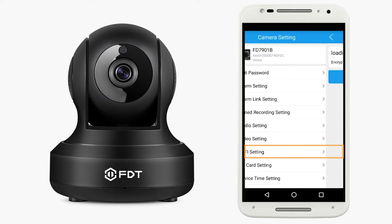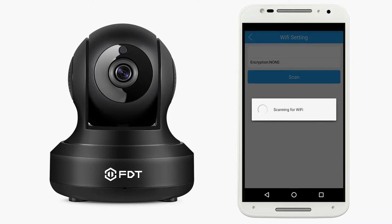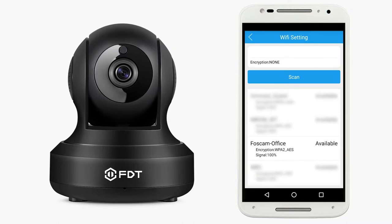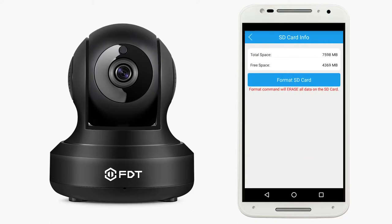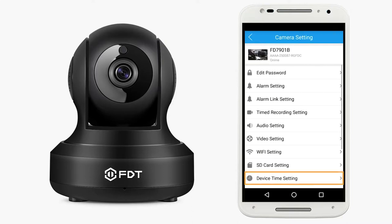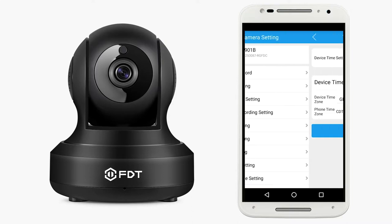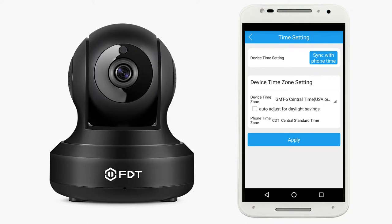Wi-Fi Setting: here you can set up and connect to your local Wi-Fi network. SD Card Setting: here you can check the total or free space available on your SD card. You also have the option to format the SD card to erase all data at once. Device Time Setting: here you have the option to sync the app with your phone time and modify the time zone settings.